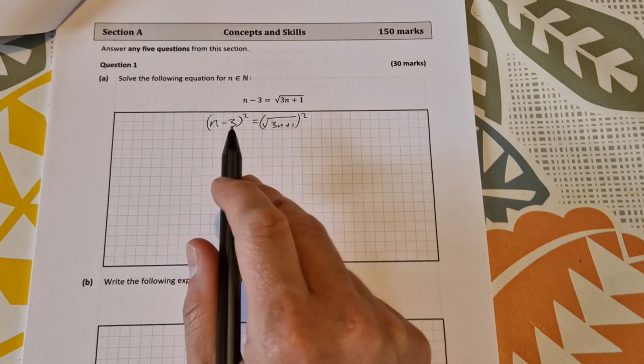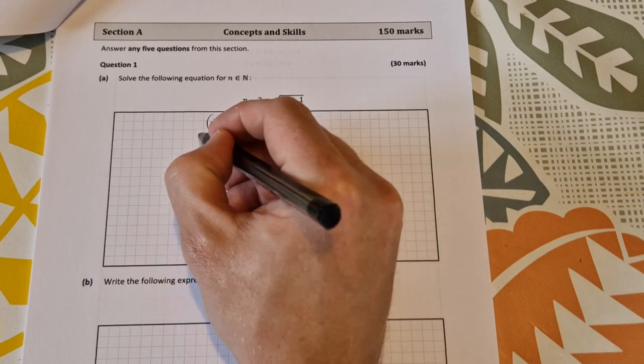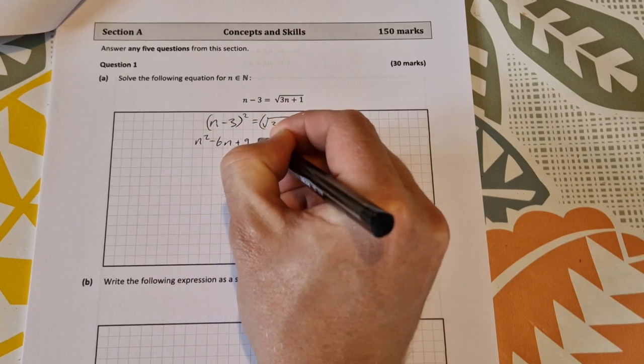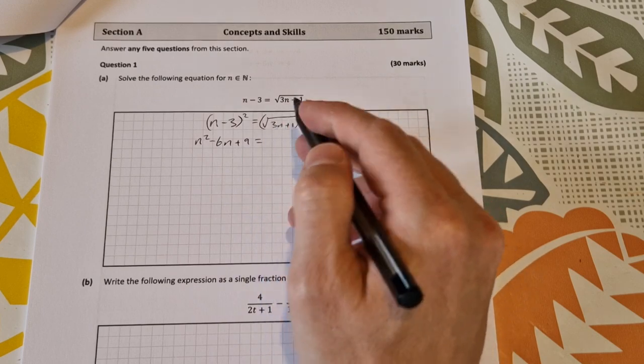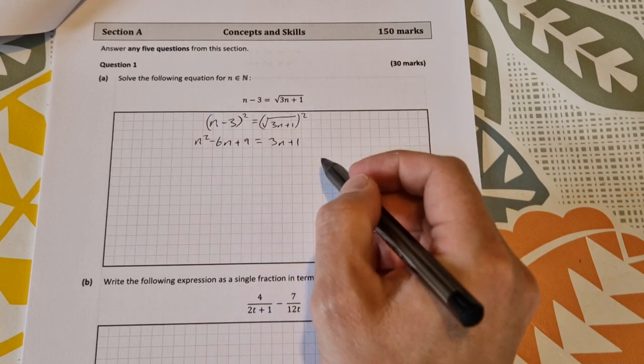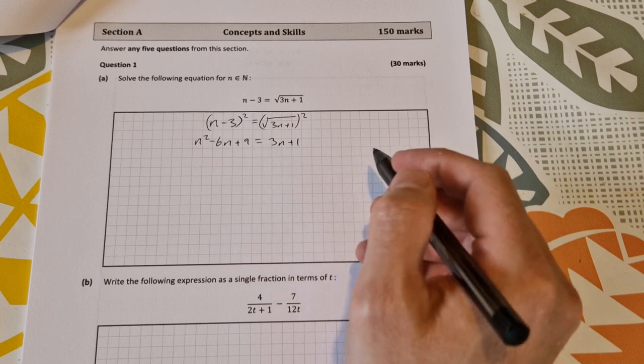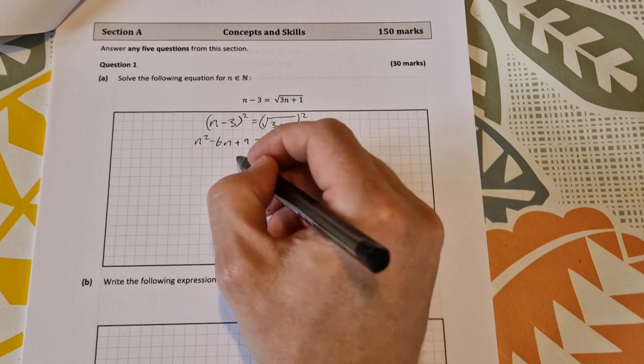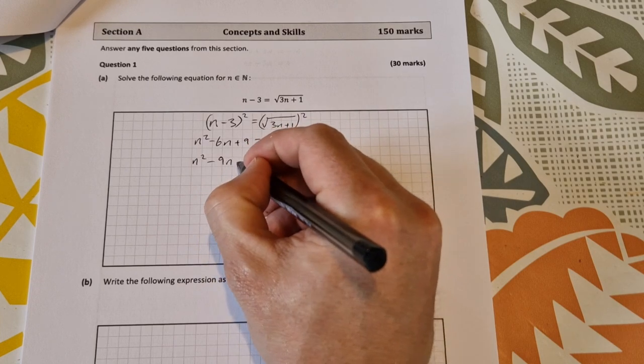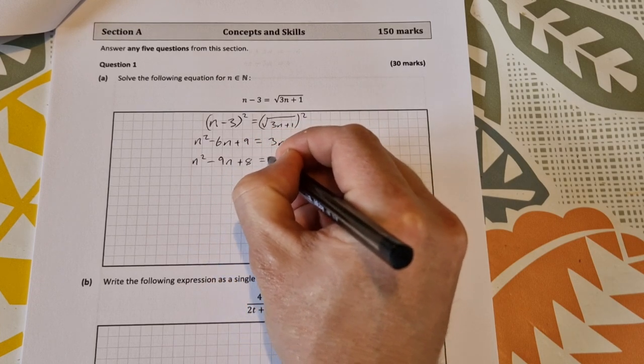So squaring out this side you get n squared minus 6n plus 9 and the opposite side then the square and the square root cancel out so you just get 3n plus 1. Take everything to one side then to make a quadratic equation you'll get n squared minus 9n plus 8 equal to 0.